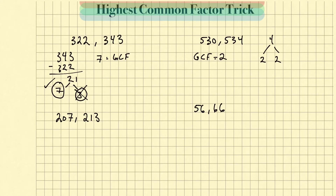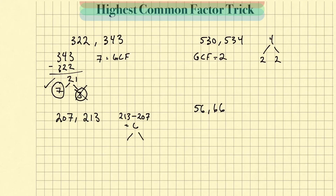Next problem: 207 and 213. First thing I want to do is find the difference — 213 minus 207 equals 6. Now I'm going to see if 6 divides into either one of these numbers. For a number to be divisible by 6, it needs to be divisible by both 3 and 2. We can automatically know these numbers are not divisible by 2 because they end in an odd number.